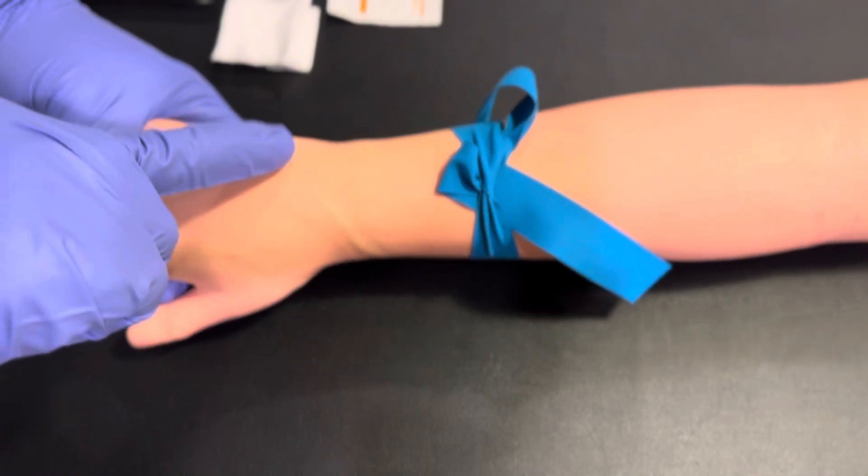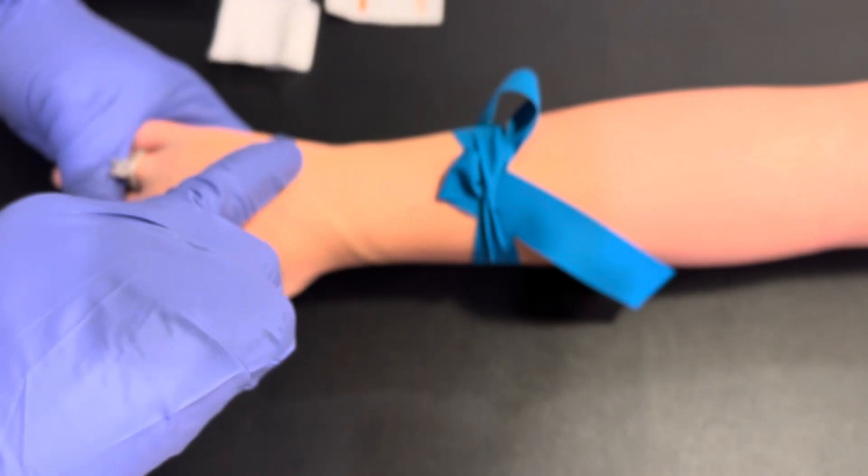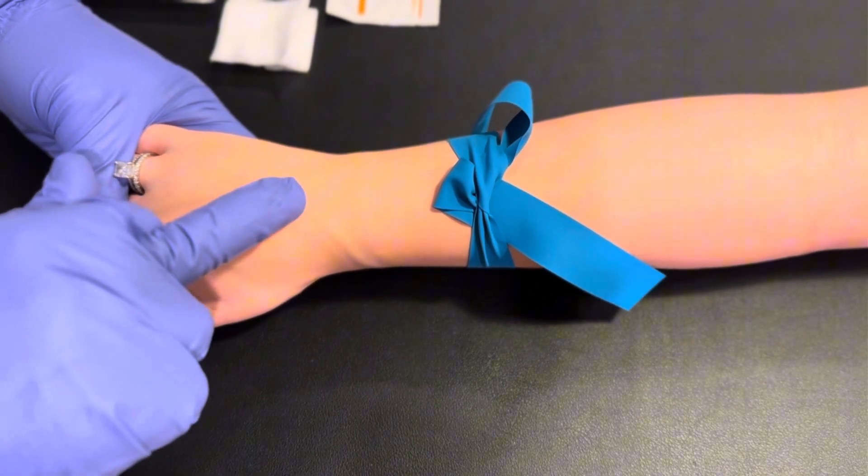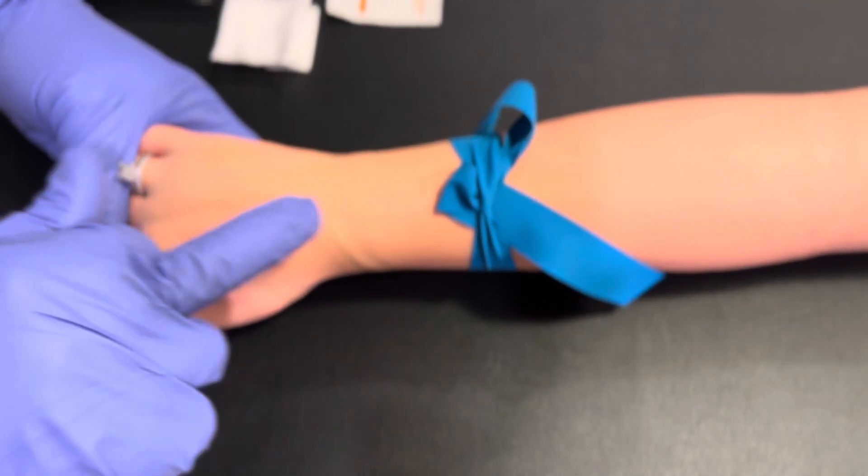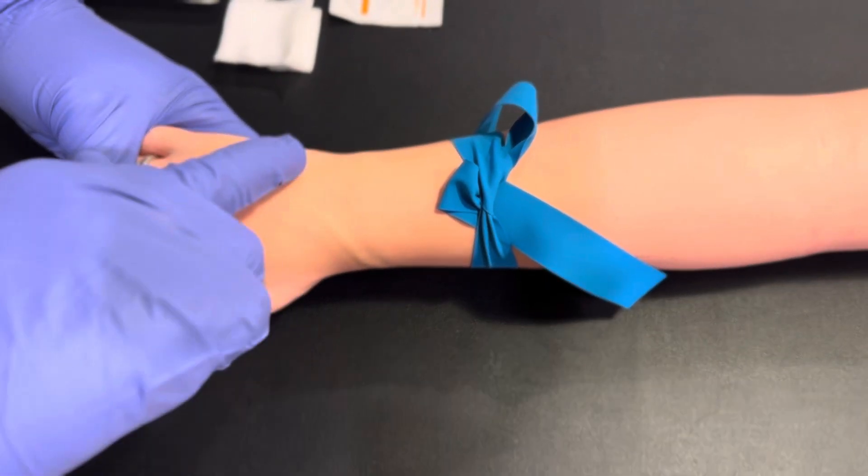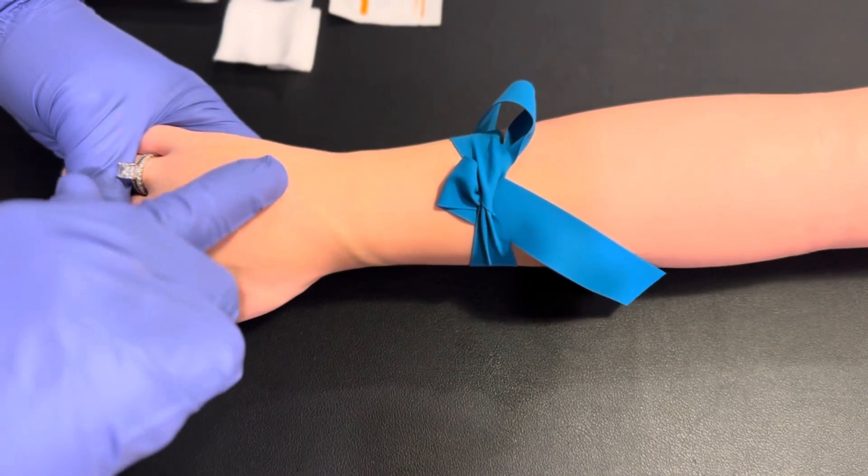Once the tourniquet is applied, allow the veins to dilate and using your index finger or middle finger palpate for the vein on the dorsal hand. Please make sure you select a site where there's soft tissue and please stay away from the bony regions of the dorsal hand veins.